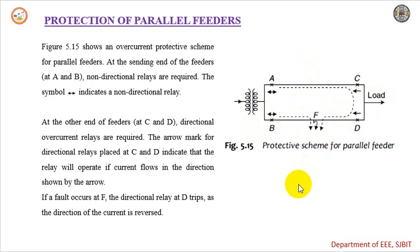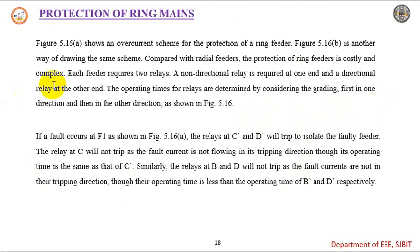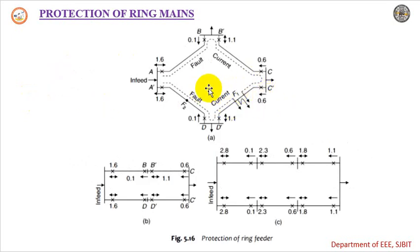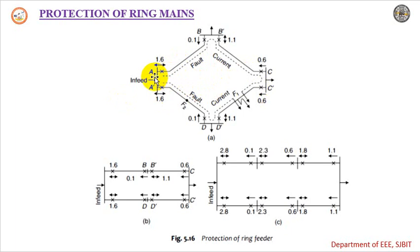This is how parallel feeders are protected. Next we have the protection of ring mains. Looking at the ring main diagram, here we have four feeders. The overcurrent scheme for the protection of the ring feeder is shown. For every feeder, there is one non-directional relay and one directional relay — this pattern repeats for each feeder section in the ring.